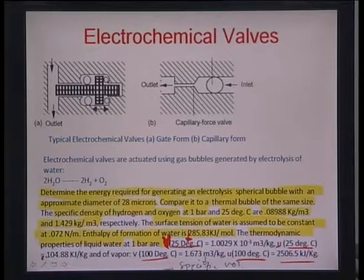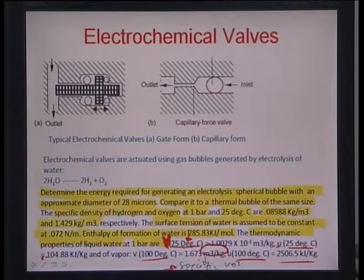Specific volume, as the units indicate, is volume per unit mass. So if you have 1 kg of hydrogen, oxygen, or another gas, you find how much volume that 1 kg occupies. This makes a common denominator for volume comparison. It is different from normal volume — it is per unit mass.